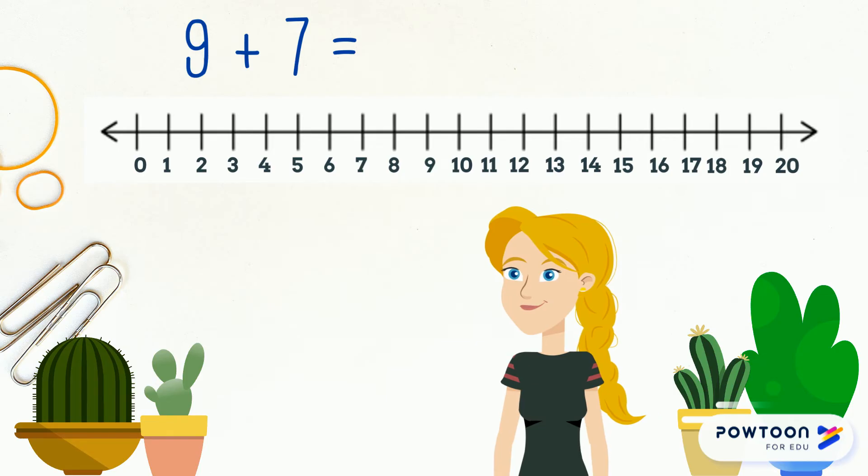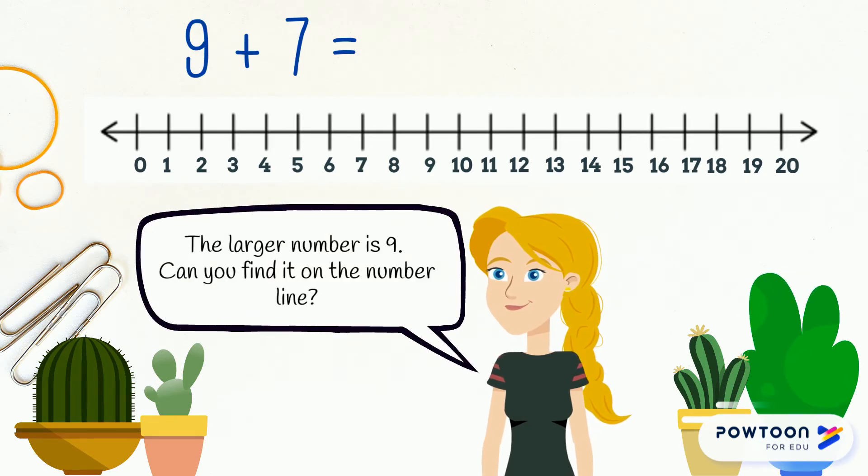9 plus 7. The larger number is 9. Can you find it on the number line? Awesome.